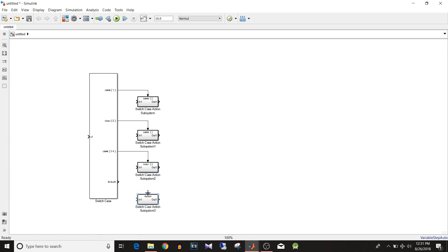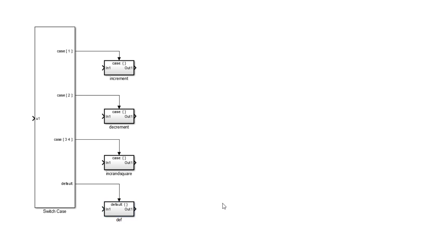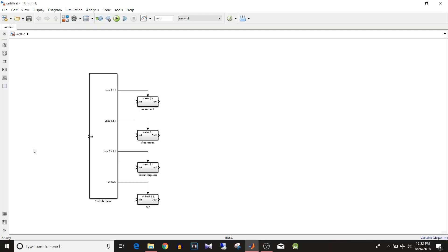We'll copy the subsystems since we have four cases to cover. The separate logic for each: first case will perform increment, second will perform decrement, third will perform increment and square, and the last one (default) will output a constant value of minus 5.